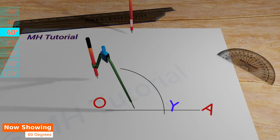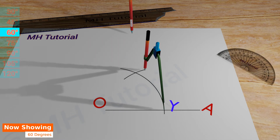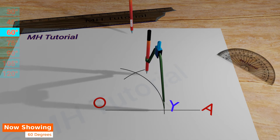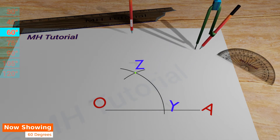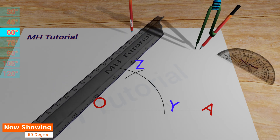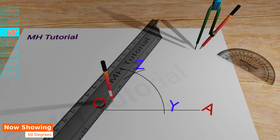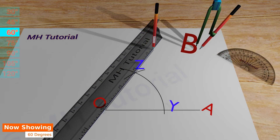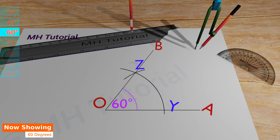Then another circle arc of the same radius is drawn with the spike placed at point Y. It intersects the previous arc at point Z. Then align the ruler about point O and point Z and draw a line segment between them. This line segment is named OB. Thus the angle AOB is a 60 degrees angle.